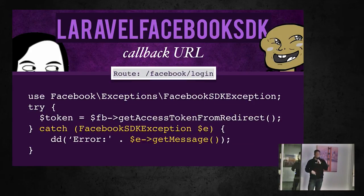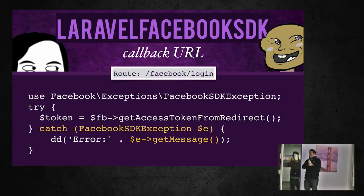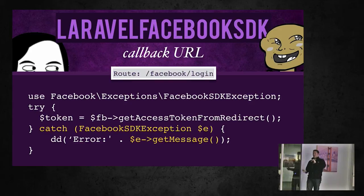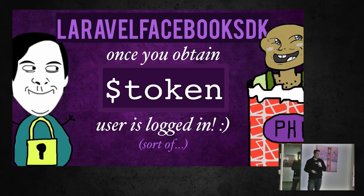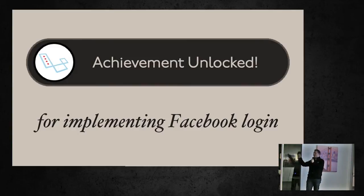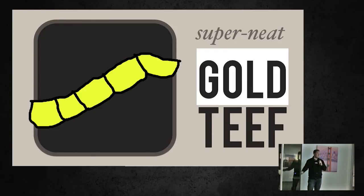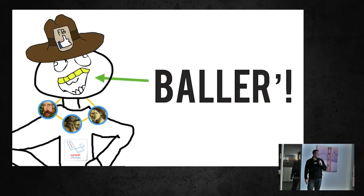That method throws an exception if something goes wrong, so wrap it in a try-catch. You catch a Facebook SDK Exception — notice this doesn't say anything about Laravel; I let all the native PHP SDK exceptions fall through, so you don't have to handle multiple exception types. Once you obtain a token, your user is logged in to Facebook — though you haven't actually logged them into Laravel yet, which is another topic.